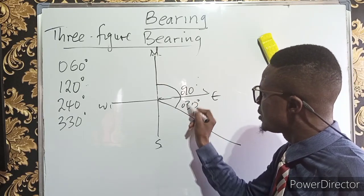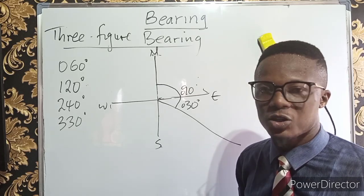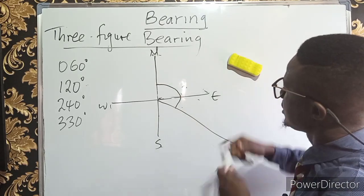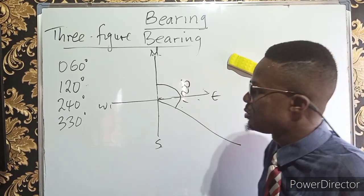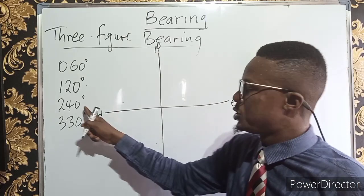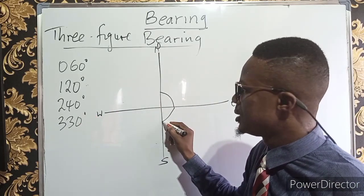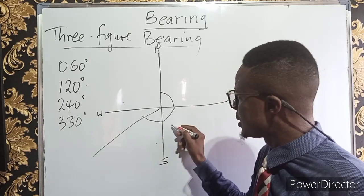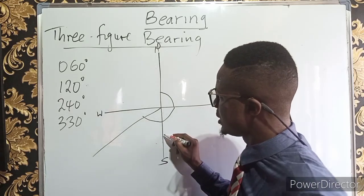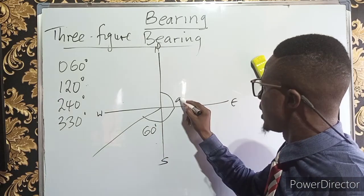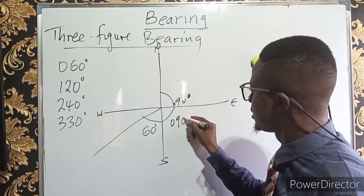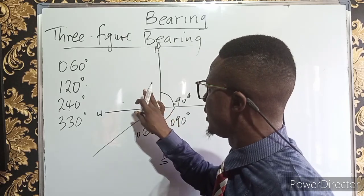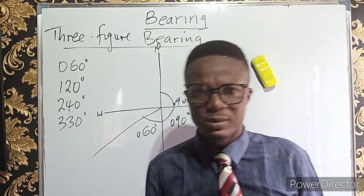This pattern of breaking down angles is very important when converting three-digit bearing to compass bearing. For 240 degrees: turning from north — 90 plus 90 is 180, and 240 minus 180 gives 60 degrees further. So 240 degrees is 60 degrees into the third quadrant. For 330 degrees, it must fall in the fourth quadrant. Now let us see the relationship between the compass bearing and the three-digit bearing.